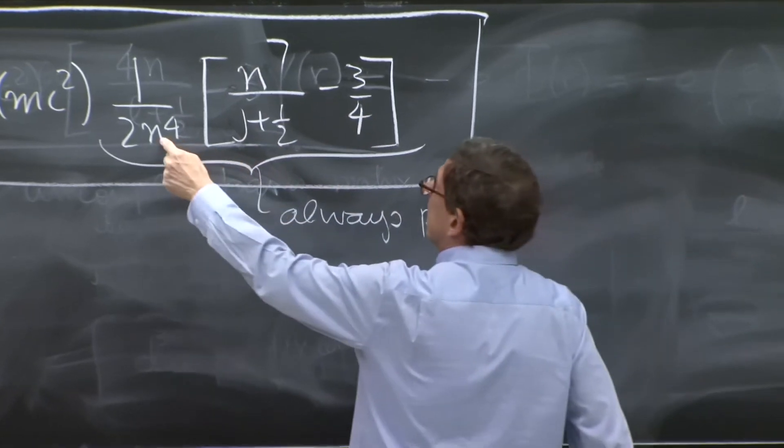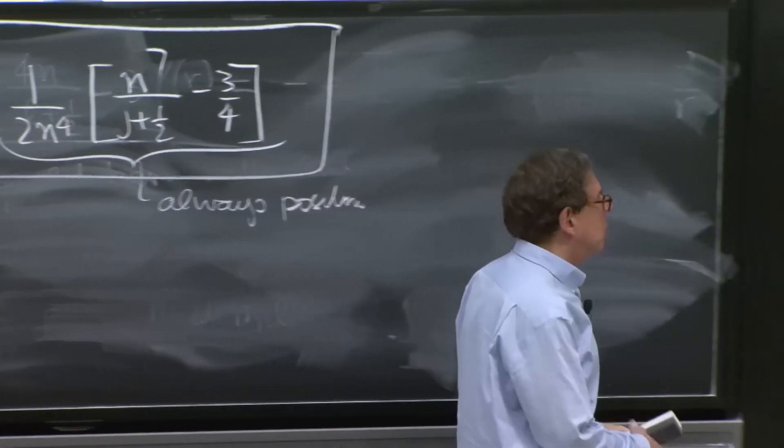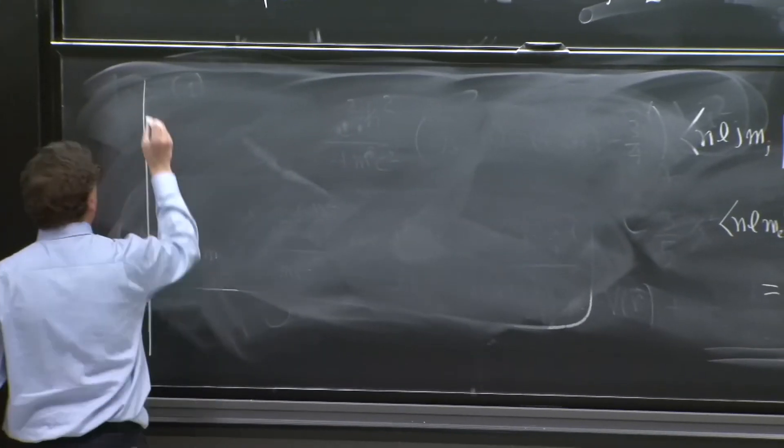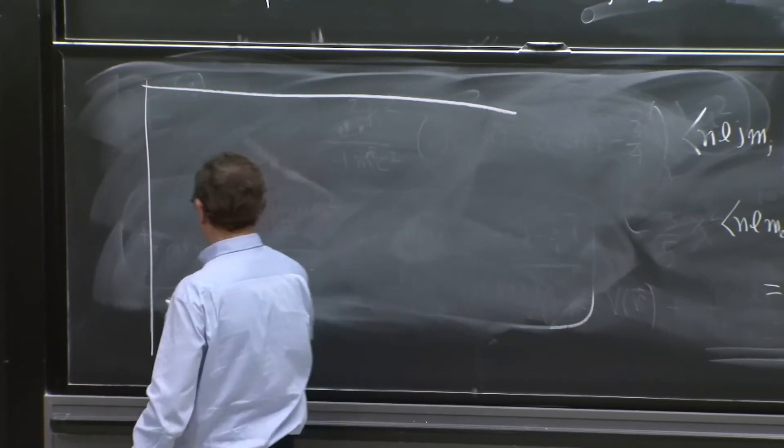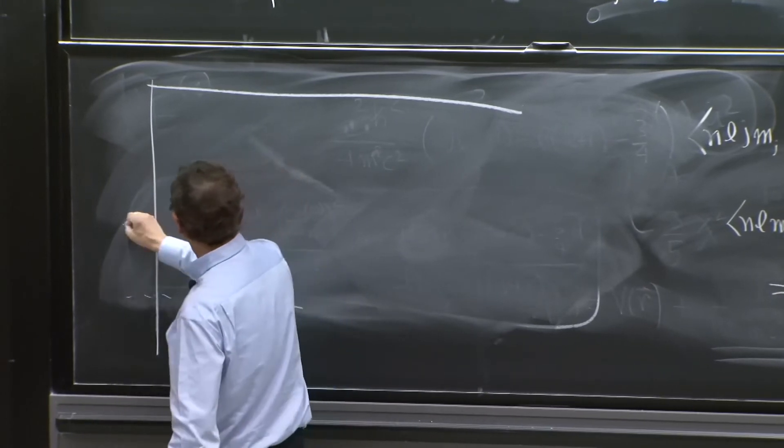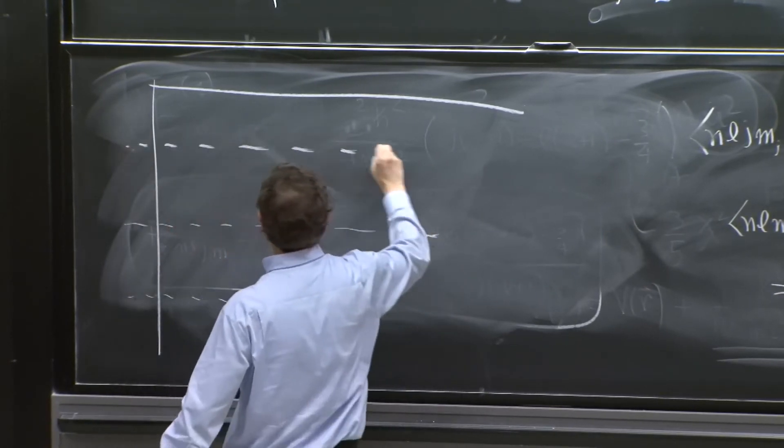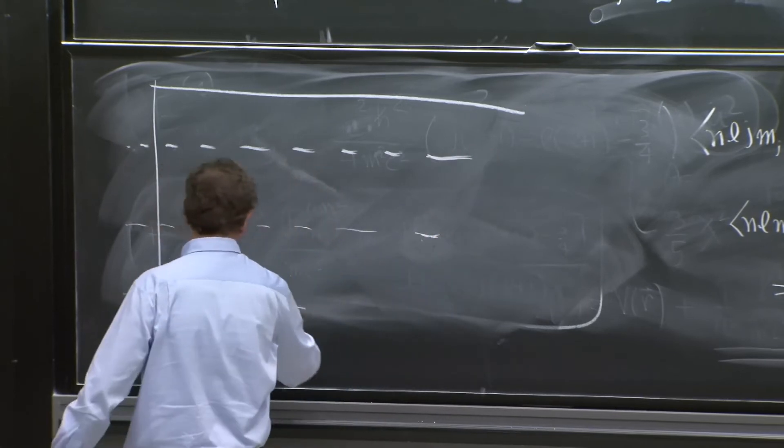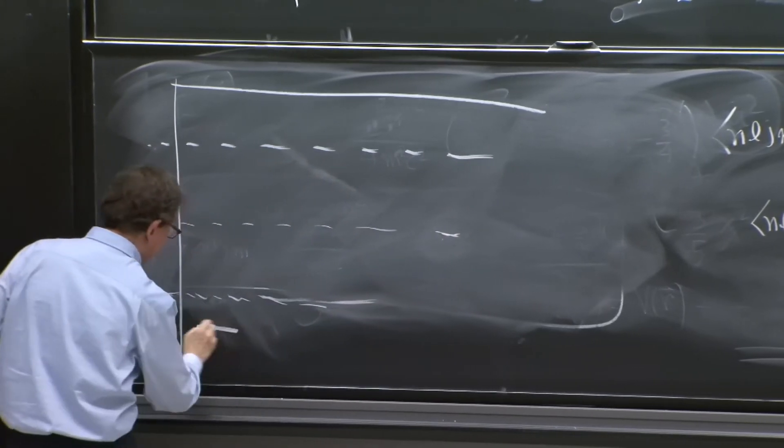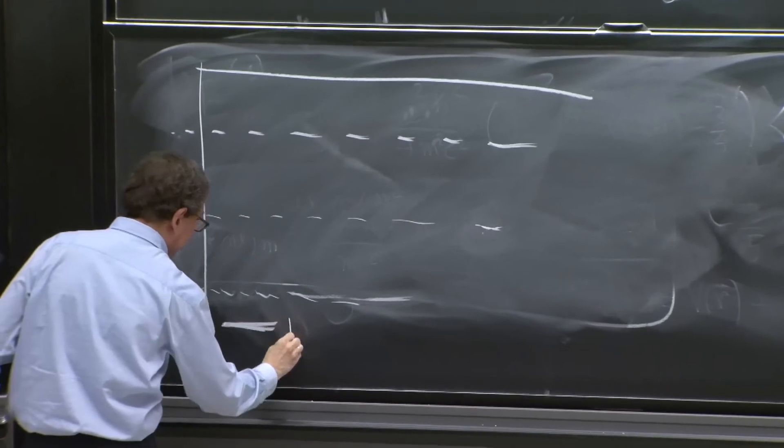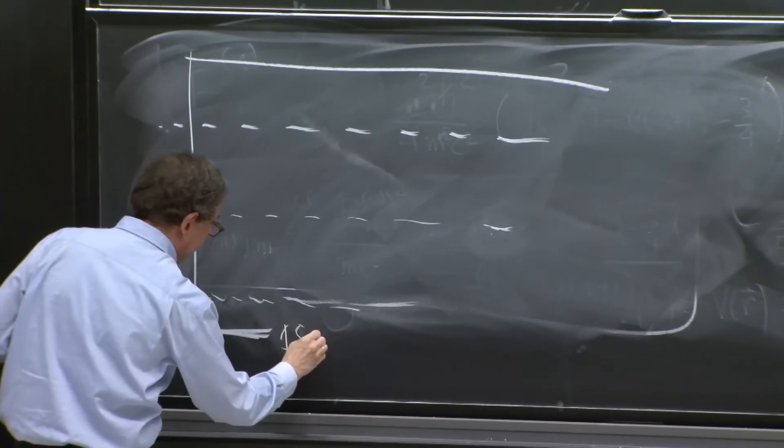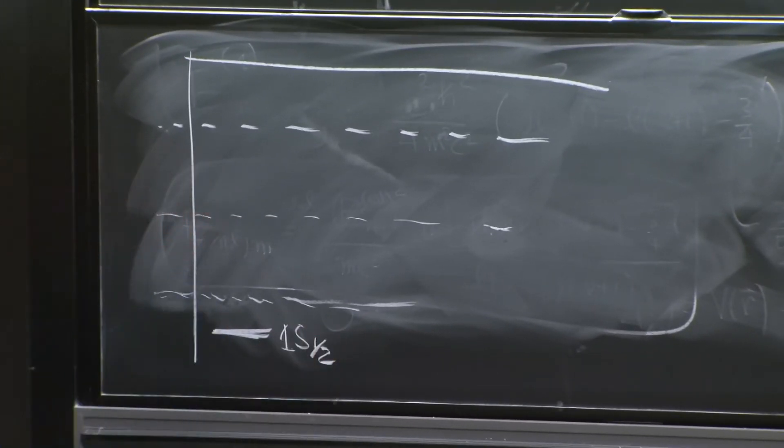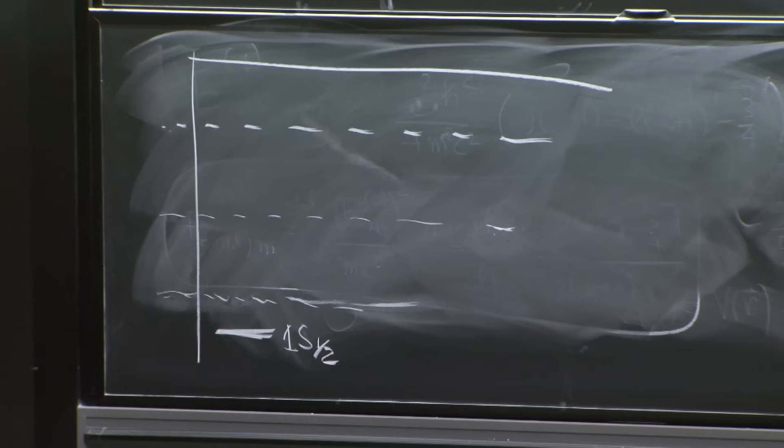As n increases, the corrections become smaller. So what happens? All the corrections are negative. So if you had the original states, they all go down a bit. Even the ground state goes down a bit. 1 s 1 half is down.